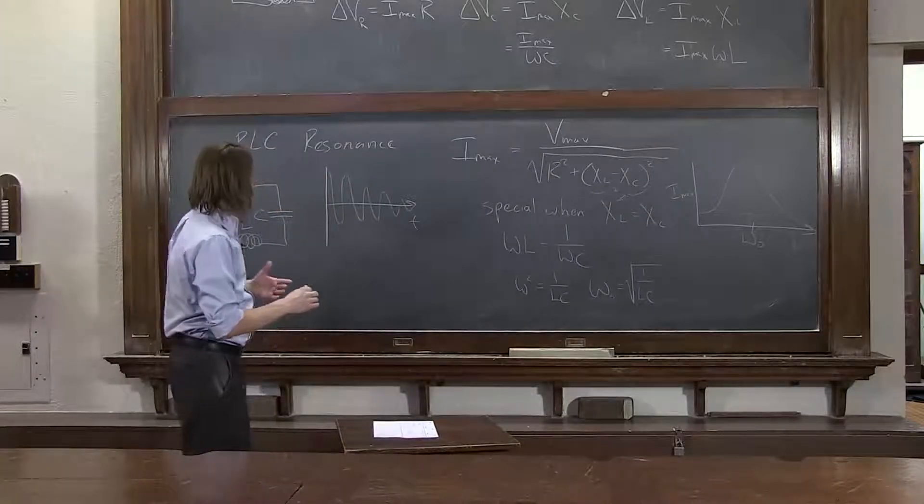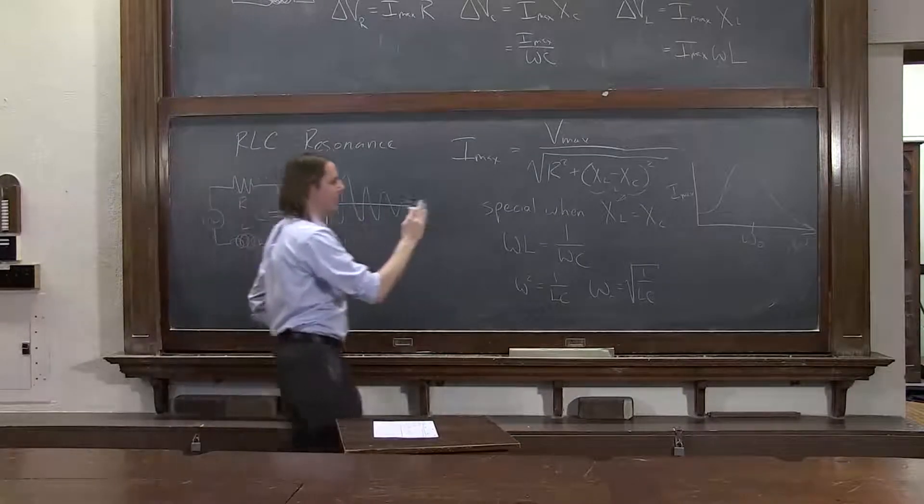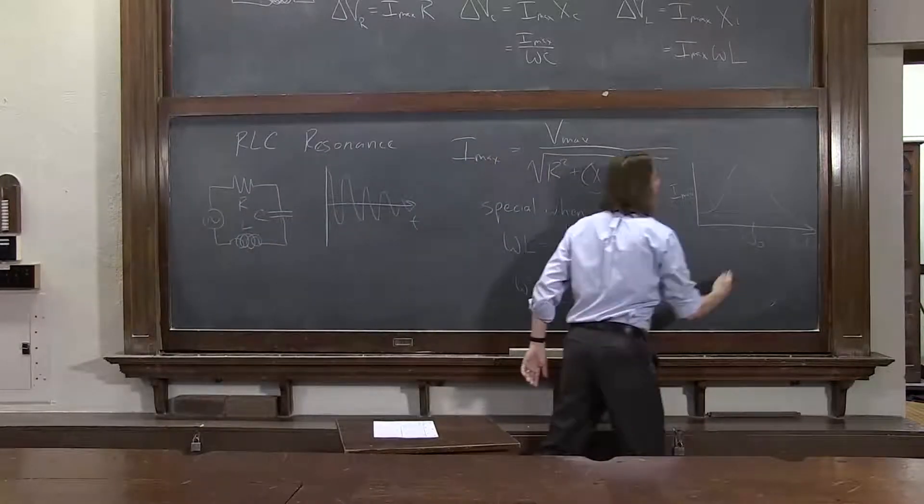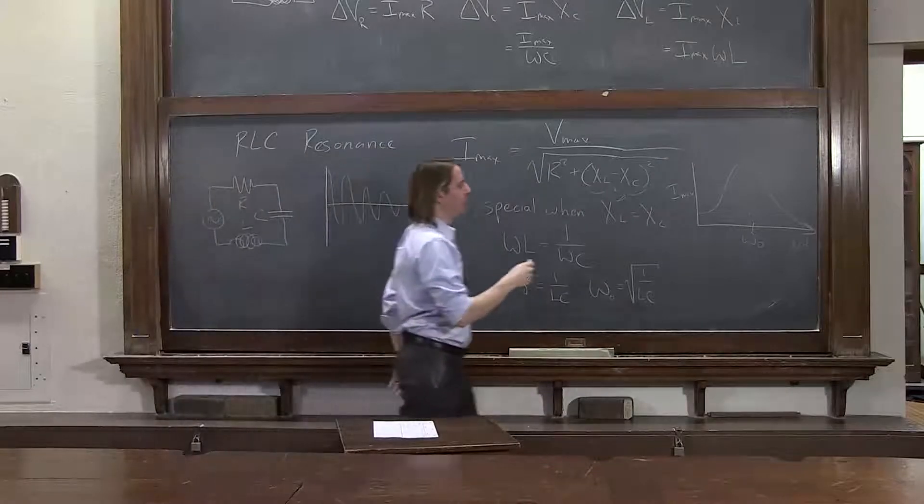So resonances are interesting. They can be really sharp or they can be not so sharp. The center, the position of the resonance, omega naught, depends on L and C. The width of the resonance, how sharp it is depends on the losses. It depends on R.